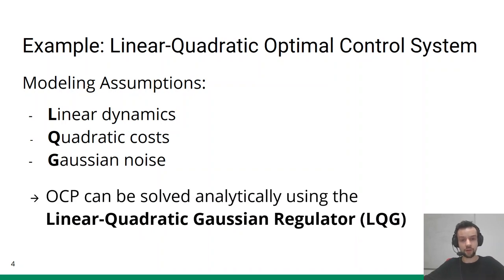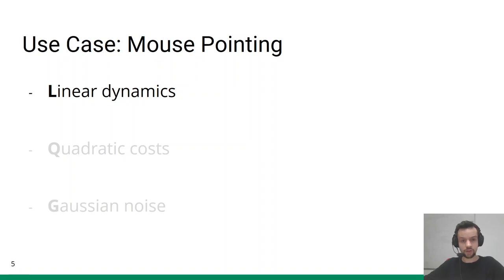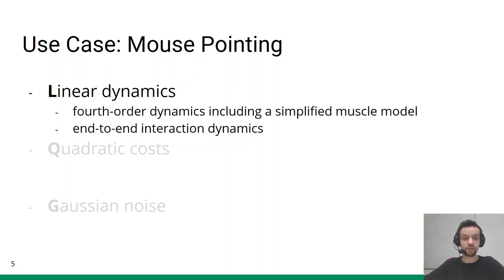In our paper, we show that this framework is capable of predicting one-dimensional mouse cursor trajectories. As mouse pointing requires only small movements, following the principle of small signals, we can linearize the nonlinearities that occur during interaction. For our model of mouse pointing, we use linear dynamics of fourth order. This means that the control does not directly affect the cursor position or velocity, as would be the case for first- or second-order dynamics. But instead, the user has to select muscle control signals. A simplified muscle model is used to generate acceleration from these signals, which is then integrated to obtain the cursor position. These dynamics can be regarded as end-to-end interaction dynamics in the sense that they model the direct effect of muscle control on the virtual mouse cursor.